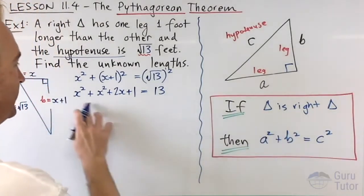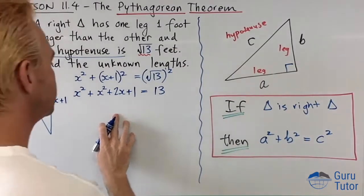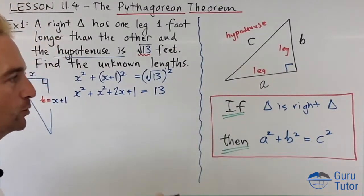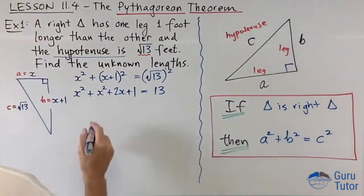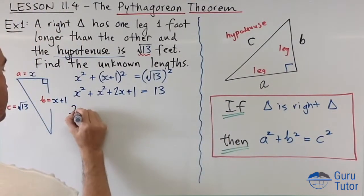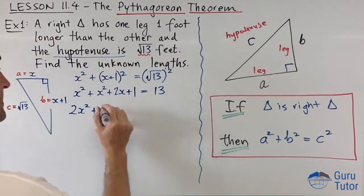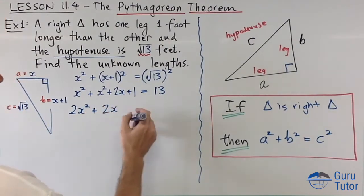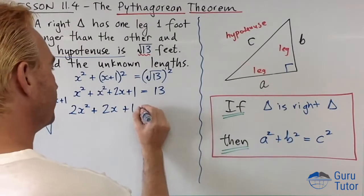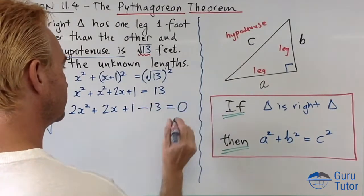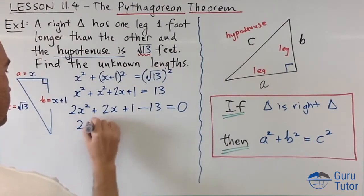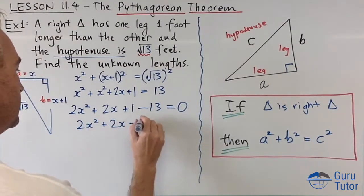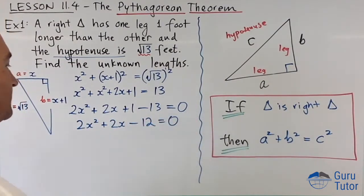Then we have a quadratic equation, so let's collect the like terms. And remember, our quadratic equations, we always like to have them equal to zero in order to solve them. So x squared plus x squared is 2x squared, 2x, no other x's, and let's bring the 13 over here: plus 1 minus 13 equals 0. A little bit more, we can now do 1 minus 13: 2x squared plus 2x minus 12 equals 0.